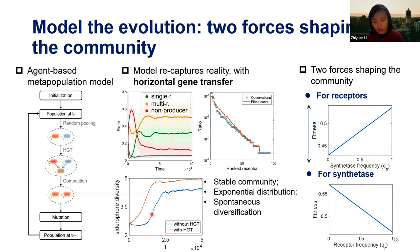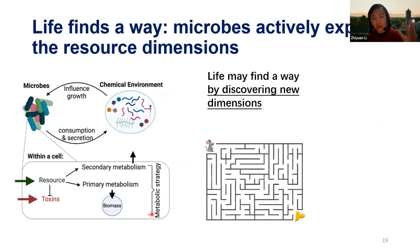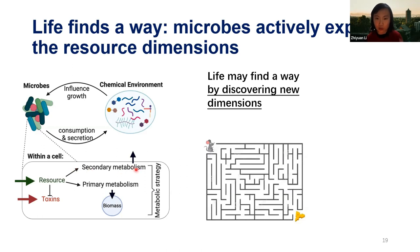Another interesting aspect of this siderophore network is that it demonstrates how microbes actively expand the resource dimension of their local habitat. Microbes are constrained by their local environment — they consume carbon, oxygen, nitrogen and get limited. But meanwhile, they use considerable resources to make secondary metabolites, including antibiotics and siderophores, to shape their chemical environment and make it more diverse.